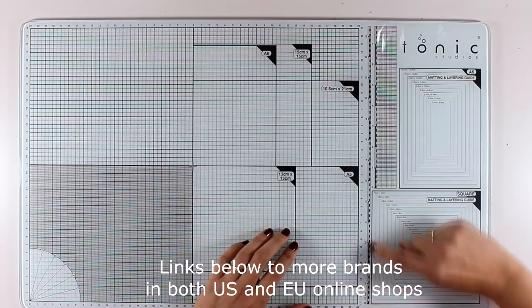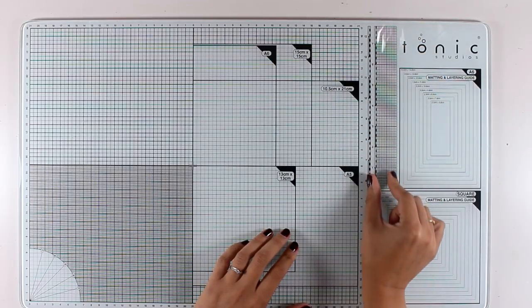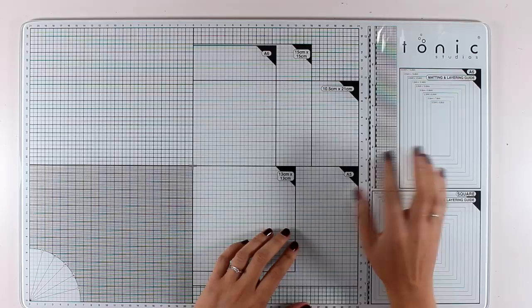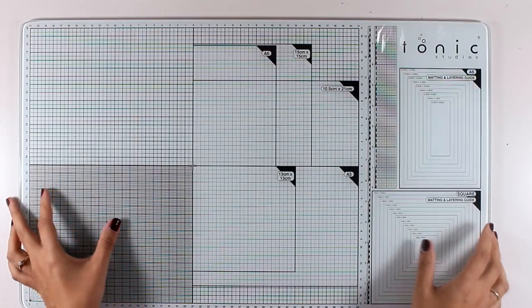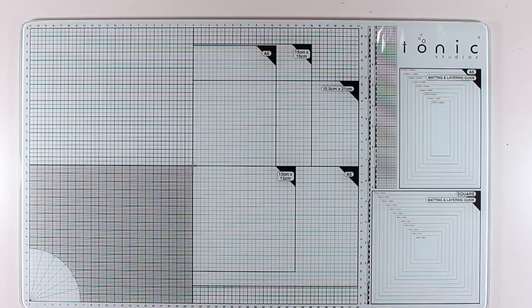Instead of having centimeters they will have inches, so there is an inch ruler here, the one I'm showing you here as well as that tiny little grid is in inches. I have learned to work both in centimeters and inches, so this is not an issue for me, but you need to keep that in mind if you want to get this specific glass mat.